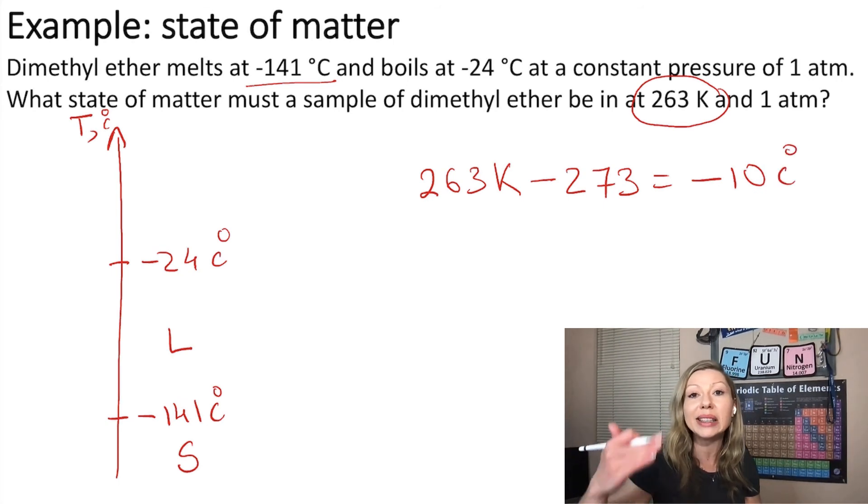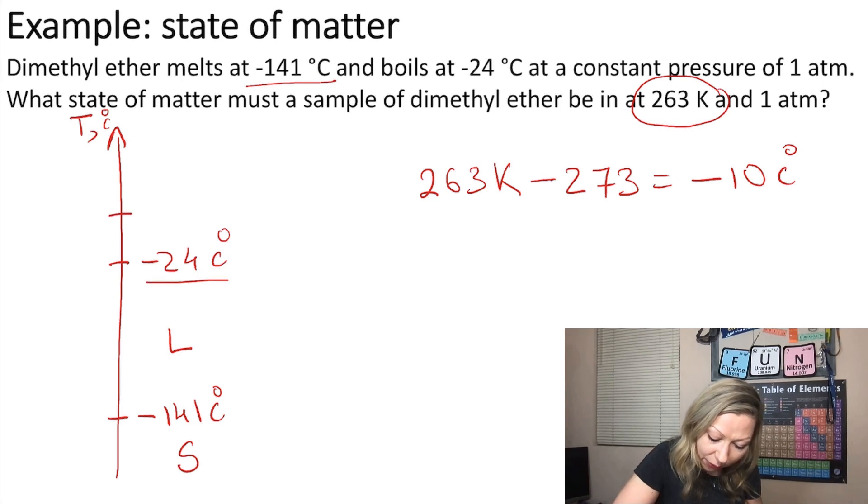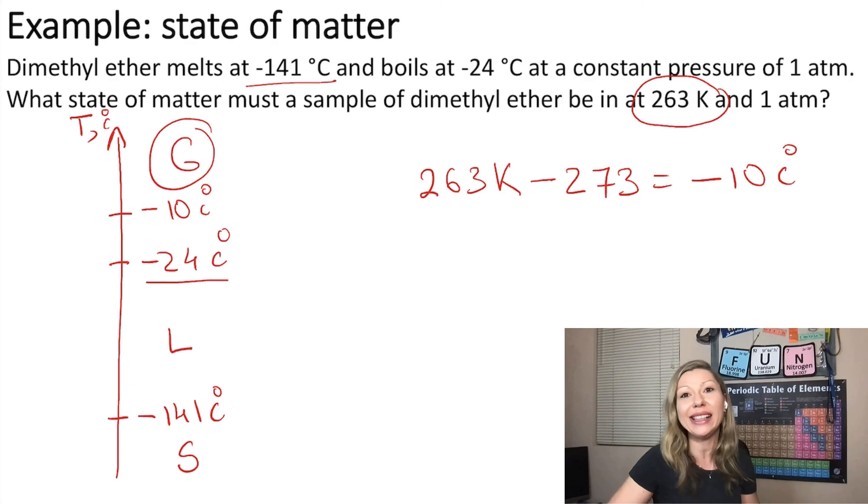So where does minus 10 degrees Celsius land in my graph? Well, it's actually going to be above minus 24 degrees Celsius, and because minus 24 is my boiling point, I'm going to have a gas right here.